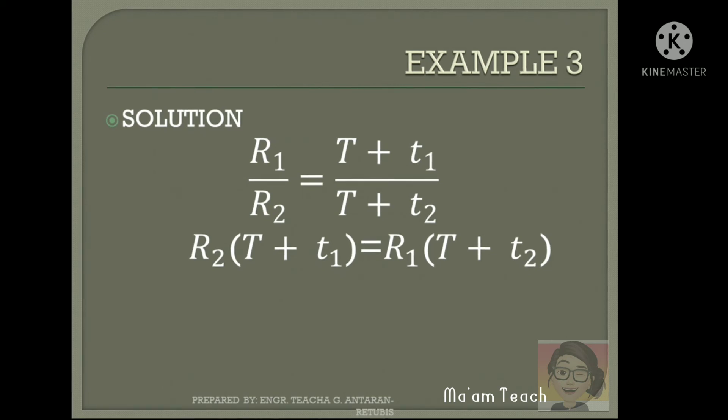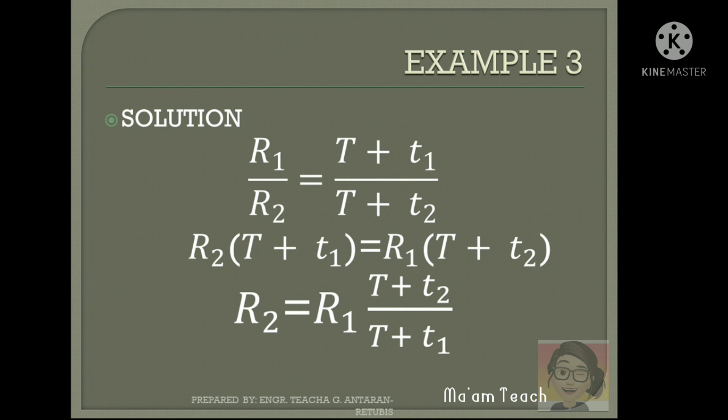In order to have R sub 2 only on the left side of the equation, we divide both sides by quantity T plus T sub 1, and we'll have this formula.